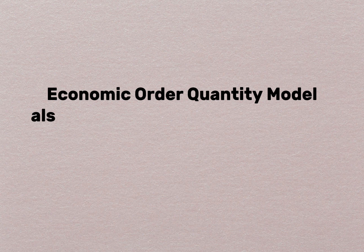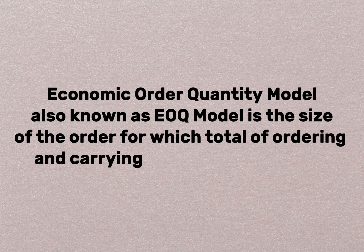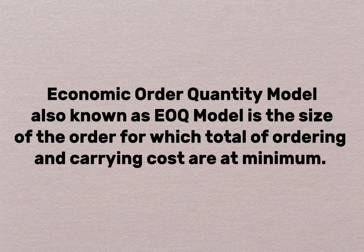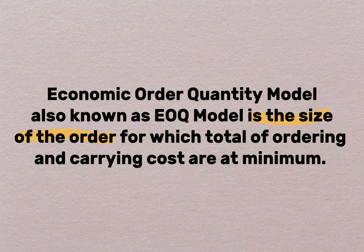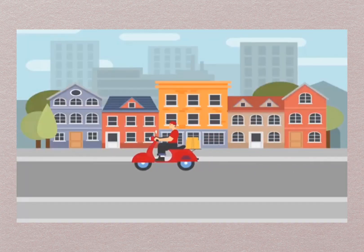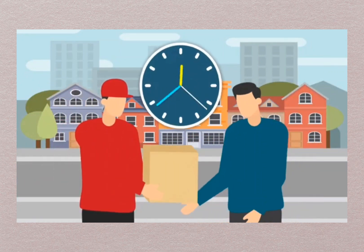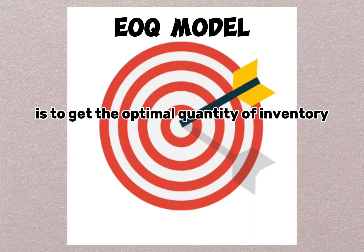Economic Order Quantity model, also known as EOQ model, is the size of the order at which the total of ordering and carrying costs is at a minimum. Let's break down this meaning. First, it is the size — meaning, it is the quantity of your order. For example, 500 units, 1,000 units, 100 units, or any number of units. That is the quantity of your order. Next, 'total of ordering and carrying costs at a minimum' simply means the number of units that is most beneficial to the company to order, because when you order that quantity, the ordering and carrying costs will be at their minimum.